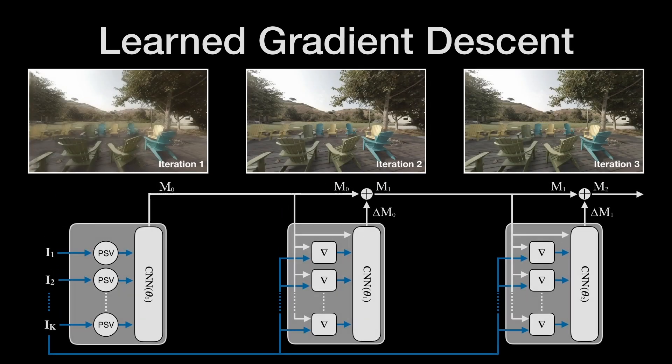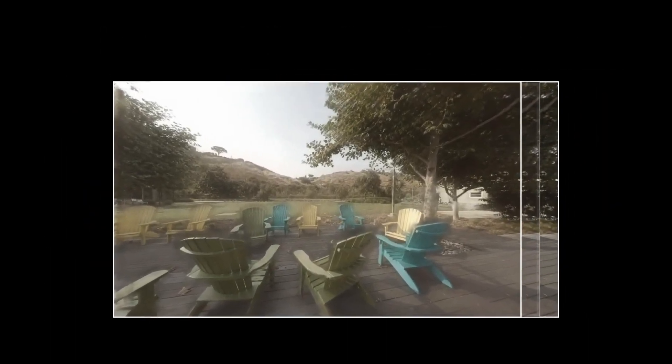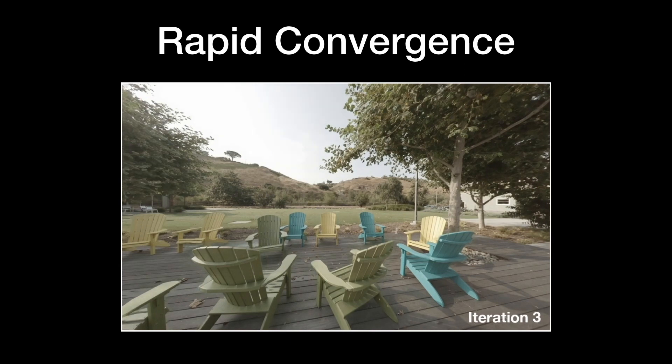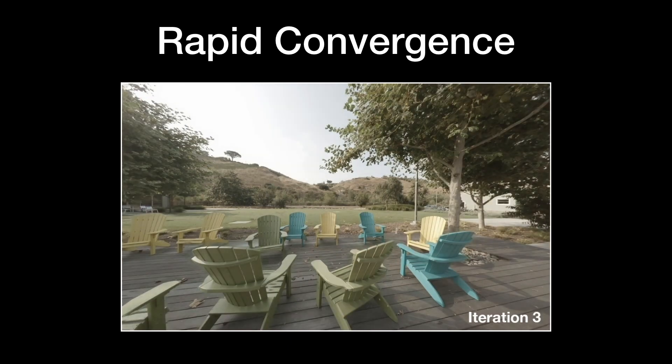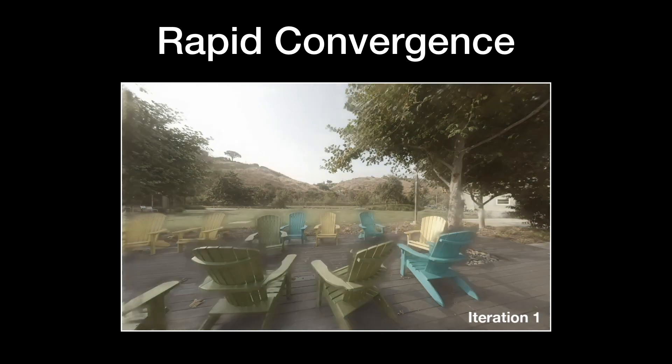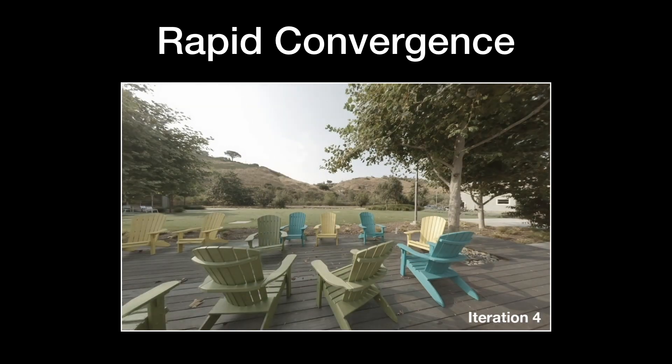Here we show a rendering from the MPI at each iteration. There is a significant improvement between the first and second iterations. However, improvements in later iterations are more subtle, showing the network makes large improvements at each iteration, requiring only a few steps.